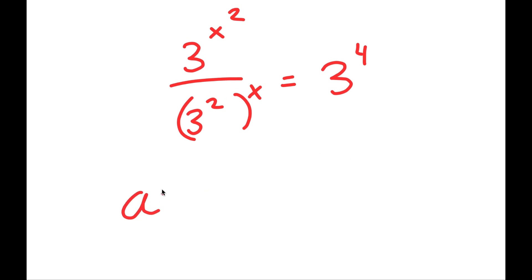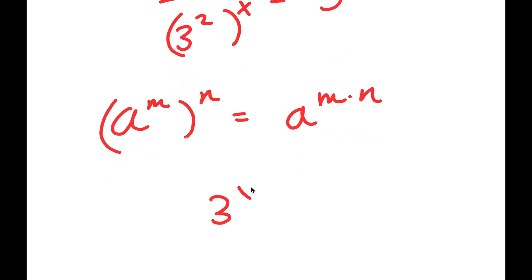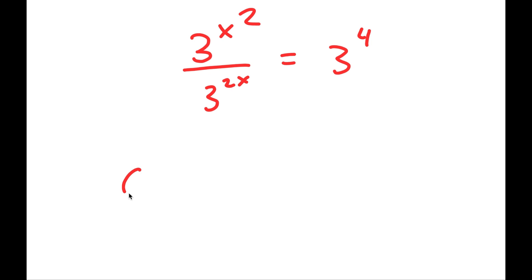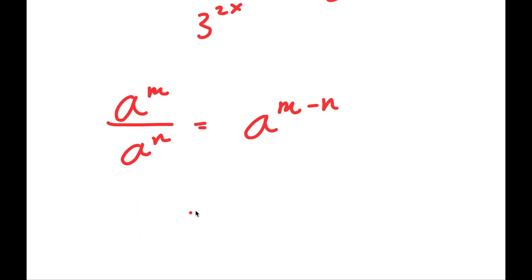Now, if I have something in the form a to the power of m to the power of n, this is equal to a to the power of m times n. So I get 3 to the power of x squared over 3 to the power of 2x is equal to 3 to the power of 4. And since a to the power of m over a to the power of n equals a to the power of m minus n, I get 3 to the power of x squared minus 2x is equal to 3 to the power of 4.